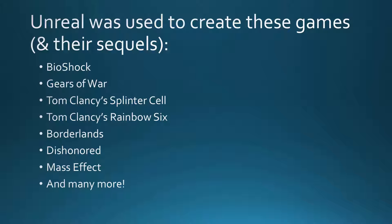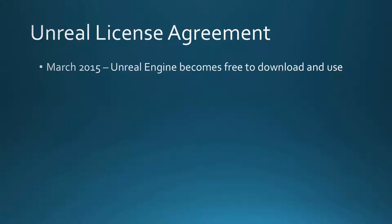These other engines weren't as good as Unreal, but they were being offered for free in exchange for a percentage of any profits made from the games. So Epic Games decided to make a bold move and adopt a similar business model. As of March 2015, the Unreal Engine is now completely free to download and use. The only stipulation is that if you create something on it and release it commercially, and it makes more than $3,000 in a single quarter — meaning a quarter of a year — then you have to pay a 5% royalty to Epic Games for any sales above the $3,000.